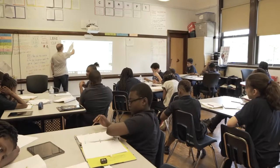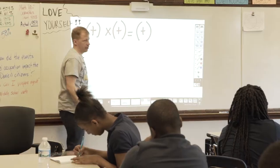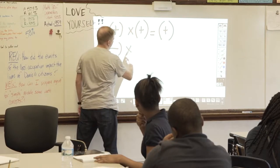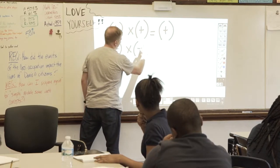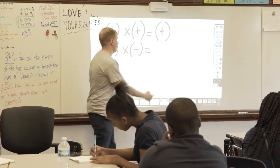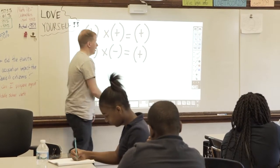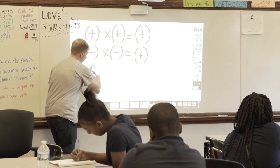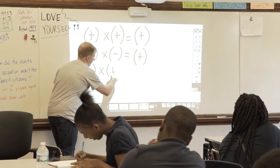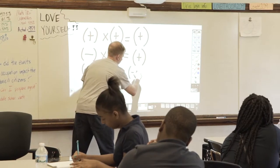Pay attention. We're going to multiply integers and then I'm turning you guys loose. A negative times a negative — this is the tricky one. Everybody's like, what? It's a positive. And a negative times a positive is a negative.